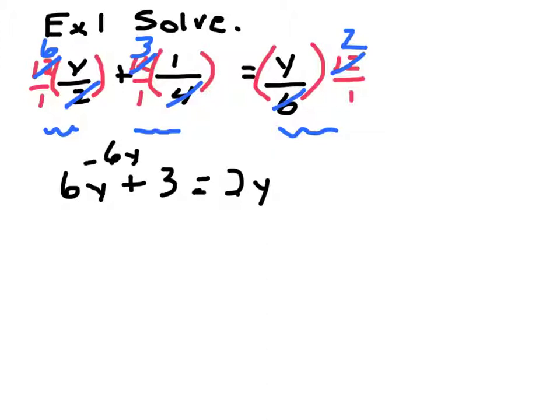Well, we would subtract 6y. And I have 3 is equal to, let's see, 2 minus 6 is a negative 4y. Now, I'll finish it off by dividing by 4. Or I should say a negative 4. They cancel.